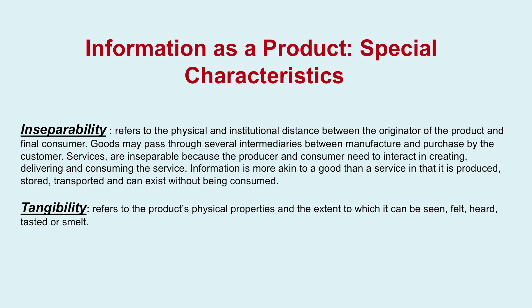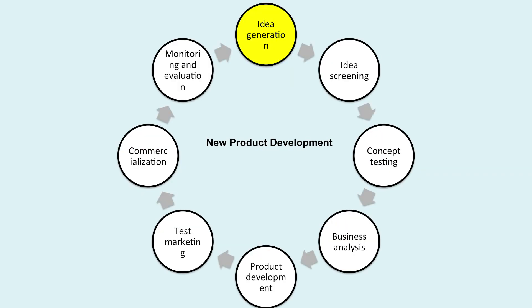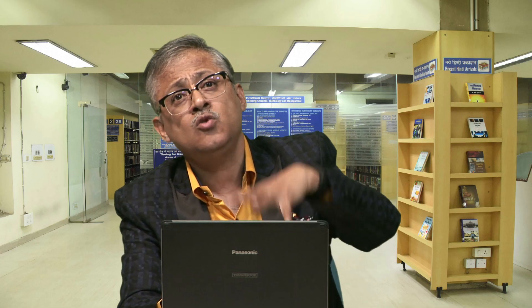Tangibility refers to a product's physical properties and the extent to which it can be seen, felt, heard, or smelled. New product development involves several steps: idea generation, idea screening, concept testing, business analysis, product development, test marketing, commercialization, and monitoring and evaluation. These are the steps you need to follow when planning to develop a product for your library to market.